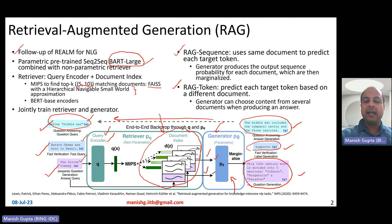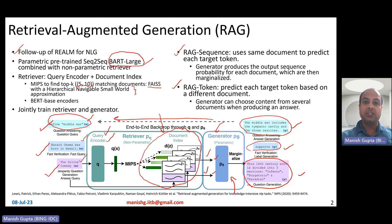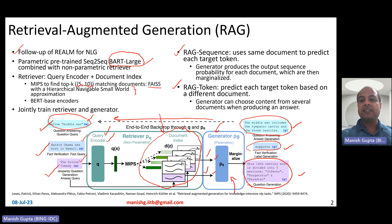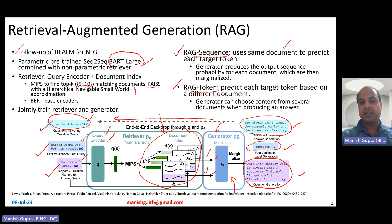You can train RAG in two different ways: RAG-Sequence and RAG-Token. RAG-Sequence means it uses the same document to predict each target token. RAG-Token means each target token is predicted based on a different document or different set of documents. If you use the same set of augmented documents for every token, that's RAG-Sequence. If each token is predicted using a different set of documents, that's RAG-Token.